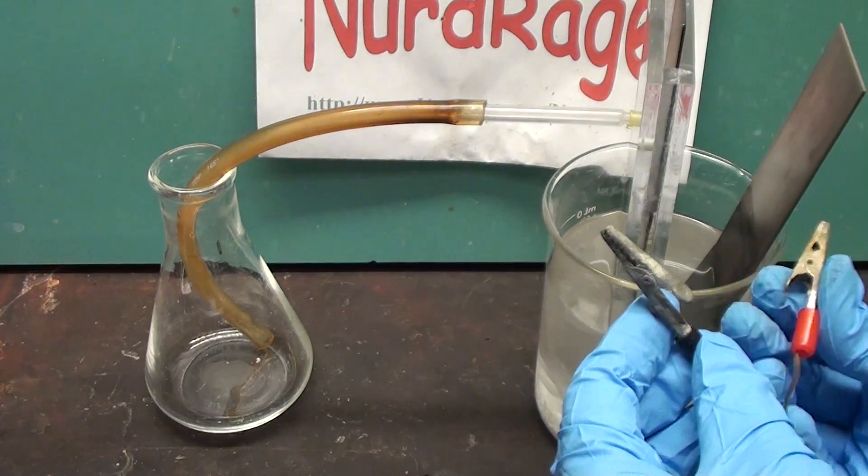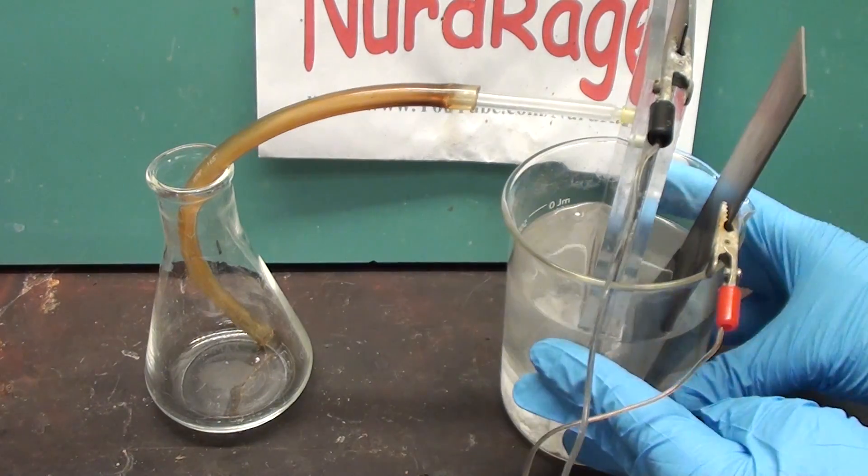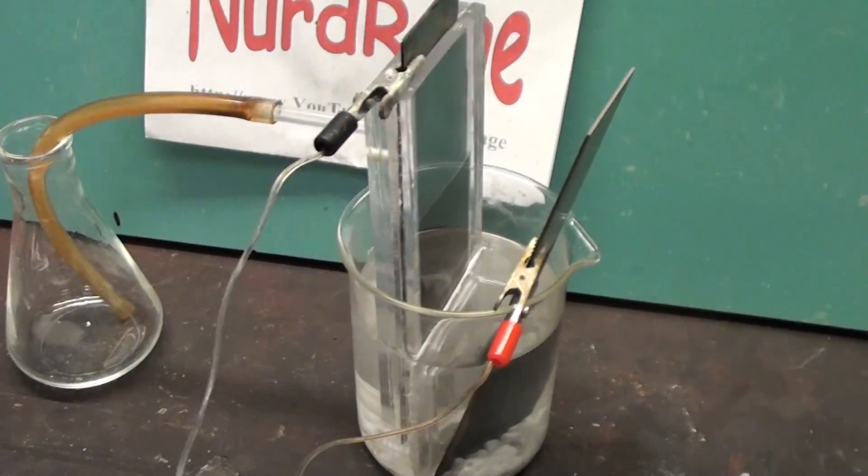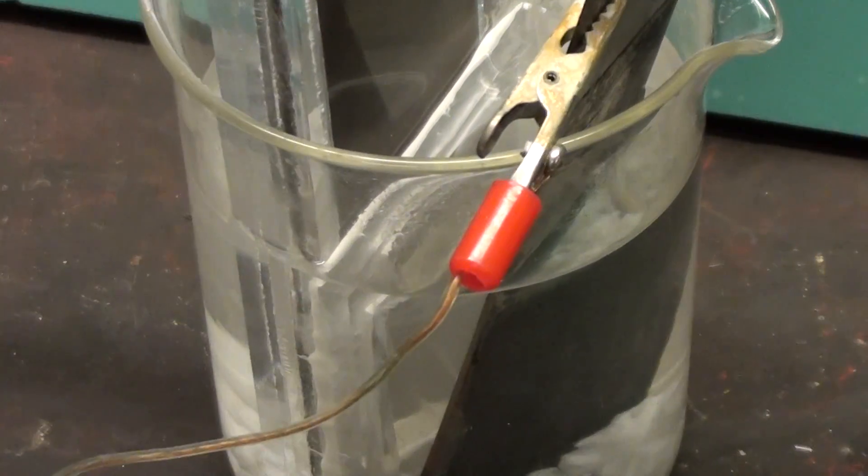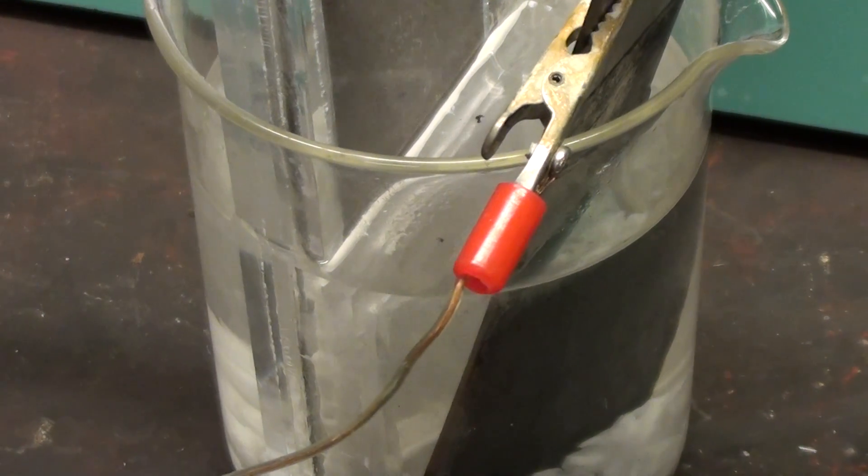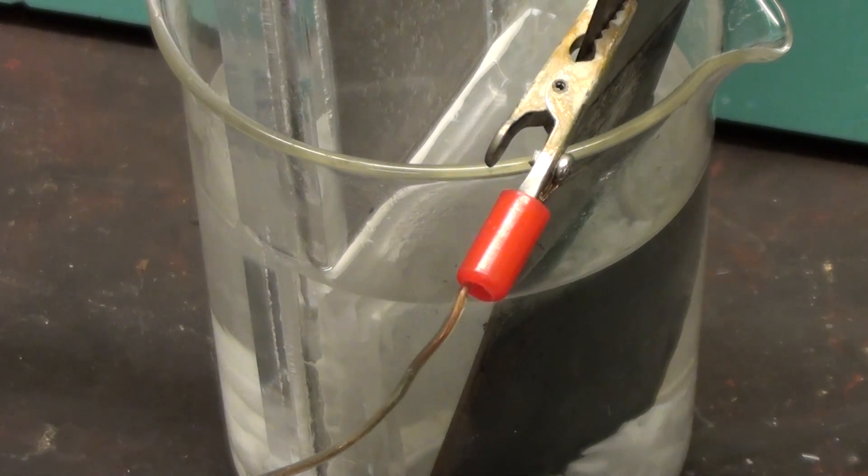Now we hook up our power clips and apply a current. The cathode is the titanium electrode inside the inner compartment and the anode is the cobalt oxide coated titanium electrode in the outer compartment with the sodium bicarbonate electrolyte. I'm applying a 1A current which corresponds to a 40mA per square centimeter current density. And there it goes.